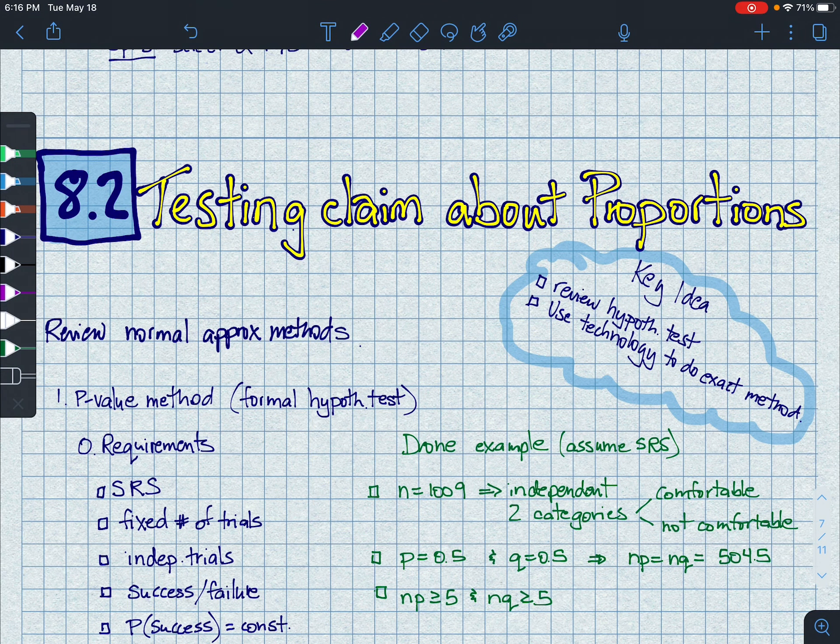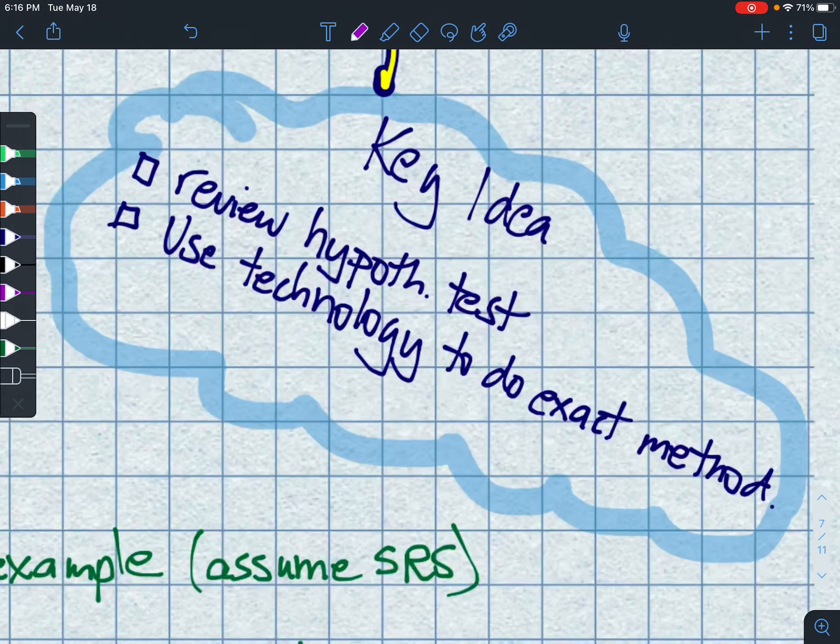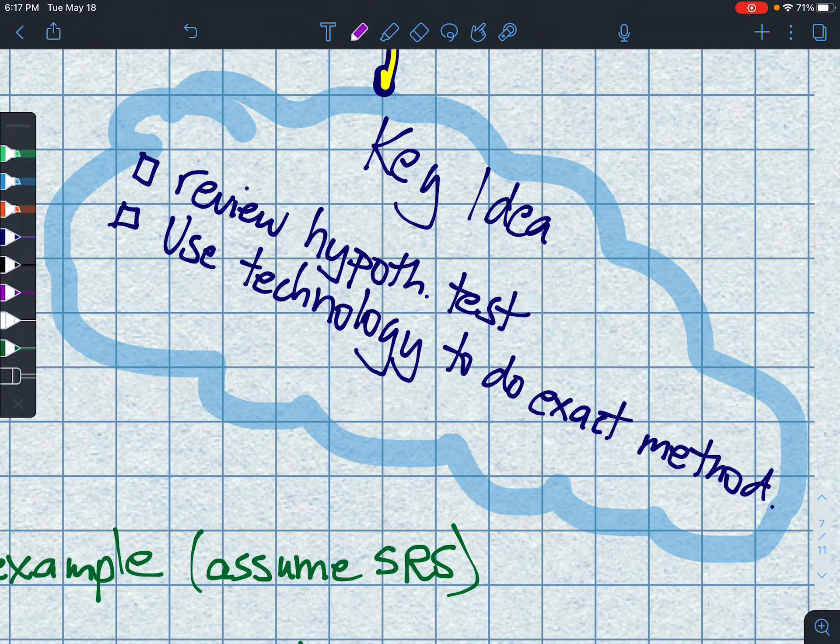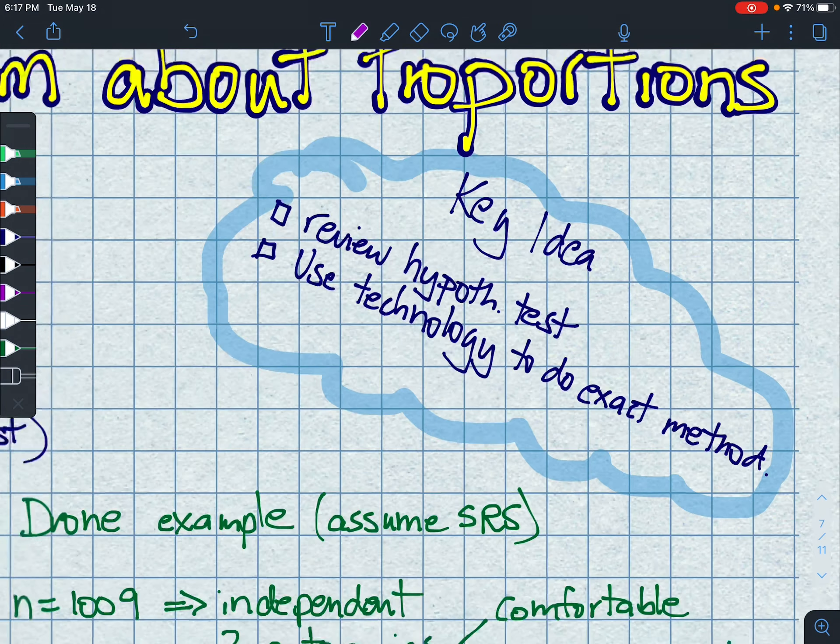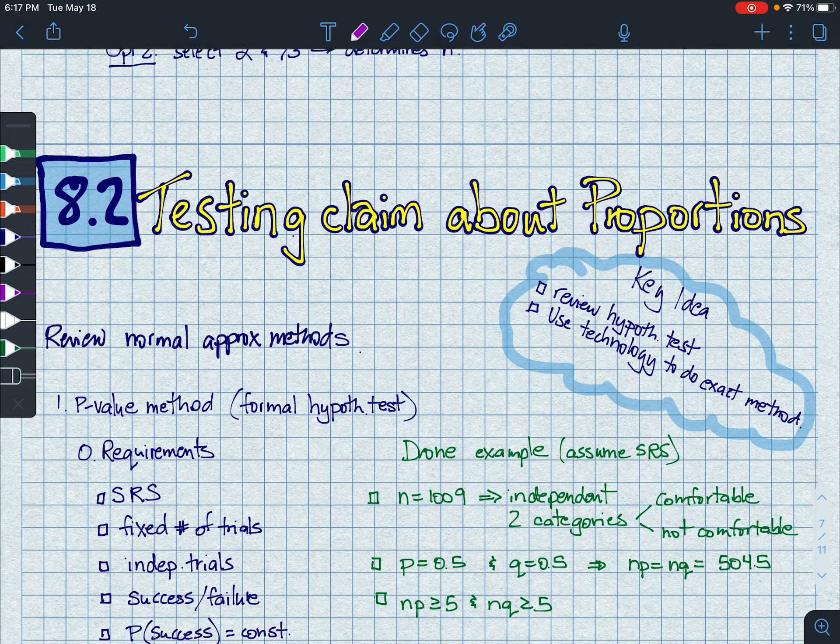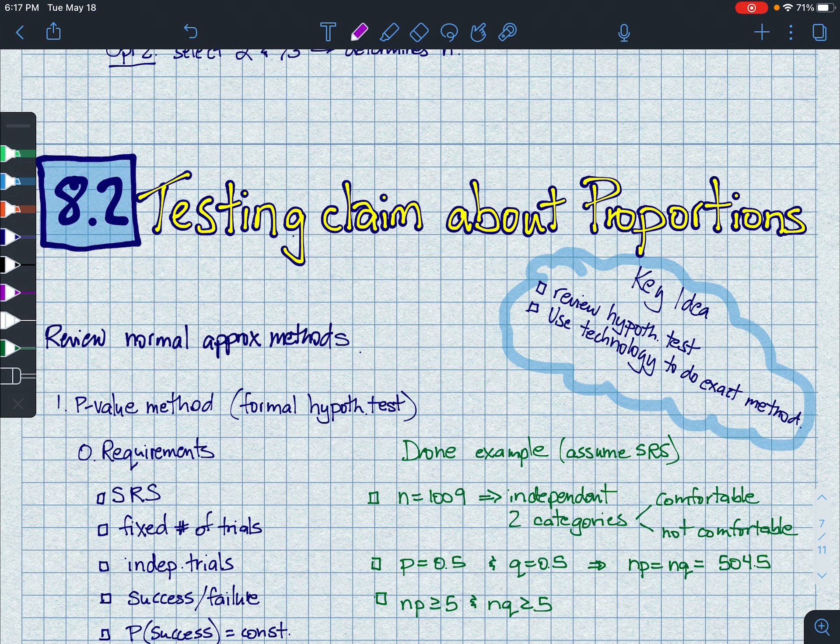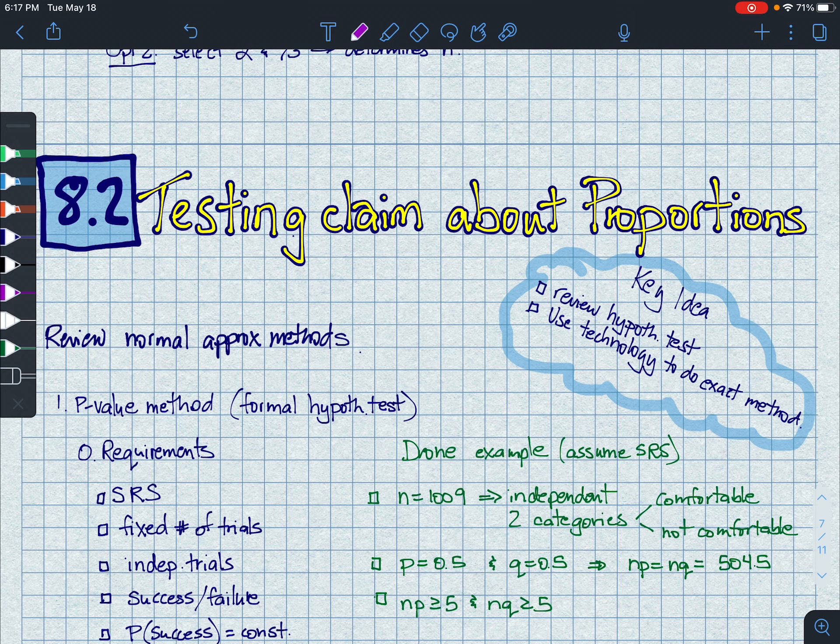All right, lesson 8.2, testing claims about proportions. Our key idea here is reviewing these hypothesis tests and then using technology to do what we would call an exact method instead of the approximation method that we're using in the hypothesis test. So it's a bit of a review of 8.1. Right at the end, there's kind of a new slash review idea.